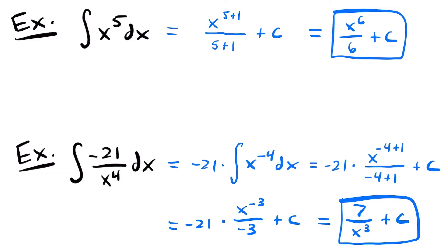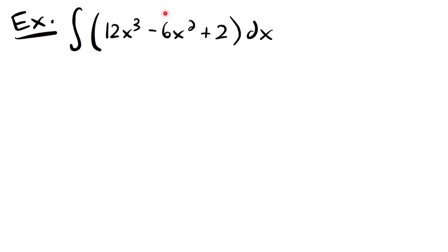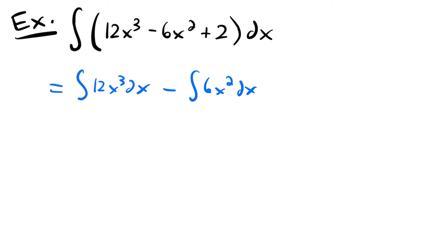Let's look at another example. Next, we have the integral of the polynomial 12x cubed minus 6x squared plus 2. If we're going to find the integral of this function, we'll have to do each of these terms separately. You could rewrite this to be the integral of 12x cubed dx minus the integral of 6x squared dx plus the integral of 2 dx — we just split up this integral into the integral of each one of these terms, which we are allowed to do.